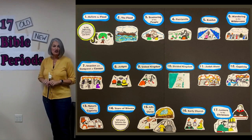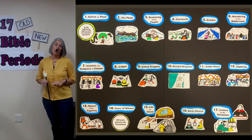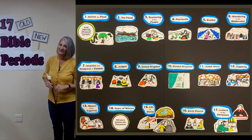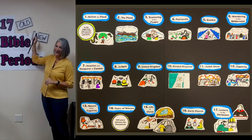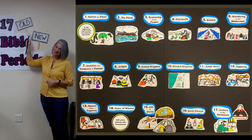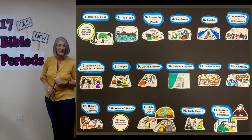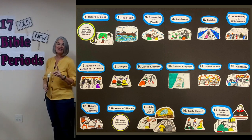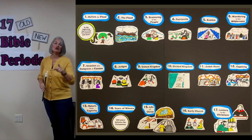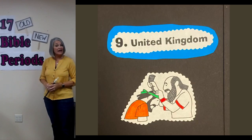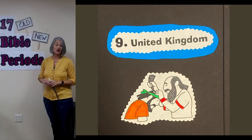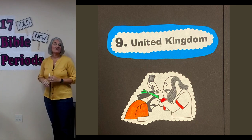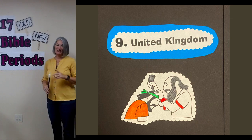Here's our next one: Saul. Saul was a very tall king. That's in the Old Testament. Saul was a king during the United Kingdom. There were three kings all together in the United Kingdom — Saul, then David, then David's son Solomon.